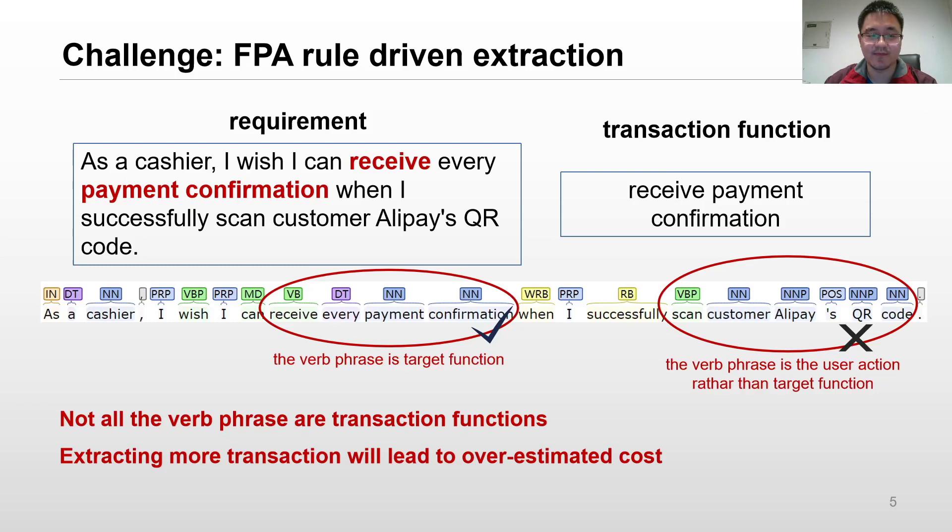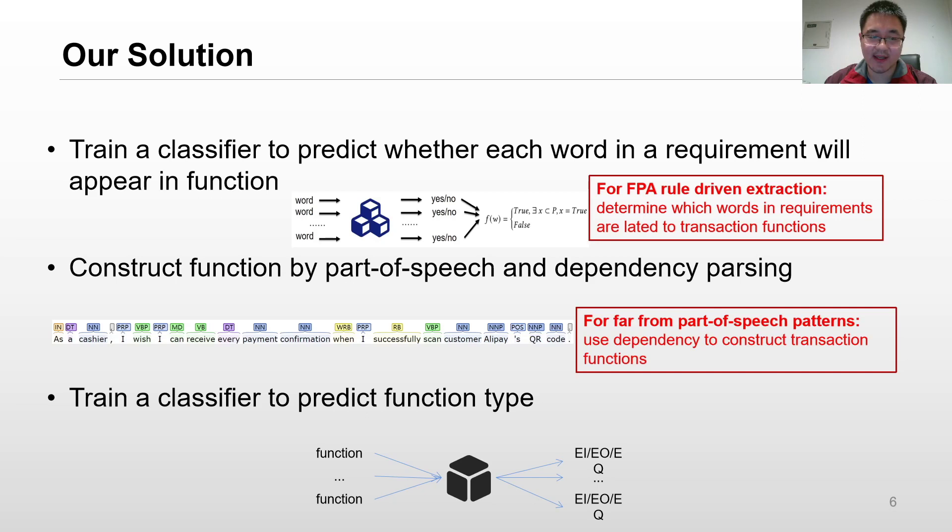In our approach, we first train a classifier to predict whether each word in a requirement will appear in a function. Then we construct functions by part-of-speech parsing and dependency parsing. Finally, we train a classifier to predict the function type.